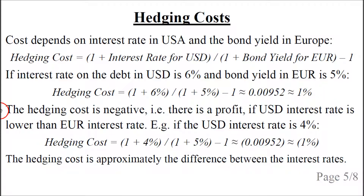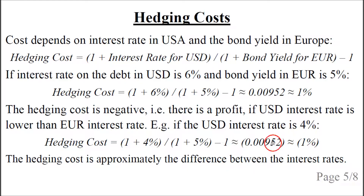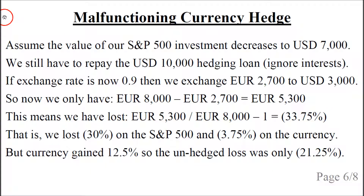The hedging cost is negative — meaning there is a profit on the hedge — if the interest rate in the United States is lower than the European interest rate. For example, if the US interest rate is only 4 percent, we get about minus 1 percent in hedging costs. Note that the hedging cost is approximately the difference between the interest rates (4% minus 5% equals minus 1%), but because the formula uses division rather than subtraction, it is only approximately minus 1 percent.